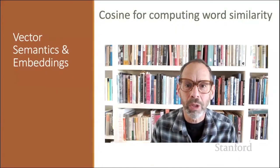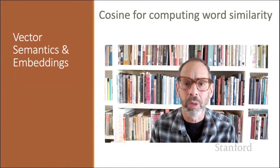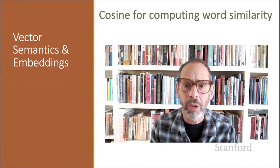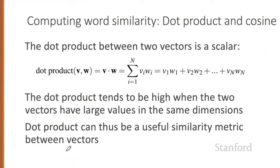To measure similarity between two words, we need a metric that compares their representations. By far the most common similarity metric is the cosine of the angle between the two vectors. The cosine, like most measures for vector similarity used in NLP, is based on the dot product operator from linear algebra, also called the inner product, in which we multiply the vectors element-wise and add up to get a single scalar value.